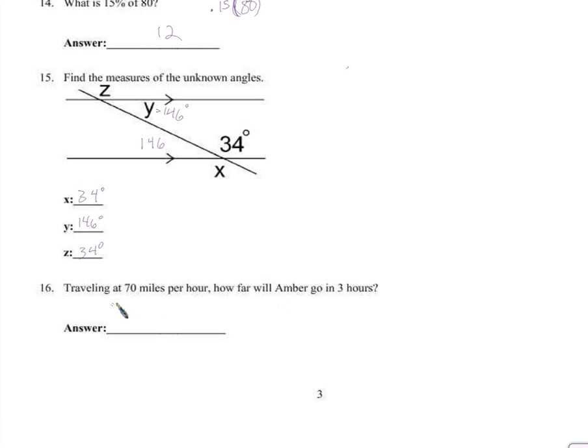If Amber travels at 70 miles an hour for three hours, then in the first hour, she's going to go 70 miles. In the second hour, she's going to go 70 miles. In the third hour, she's going to go 70 miles, so there we have three groups of 70. So 70 times three, so 210 miles.